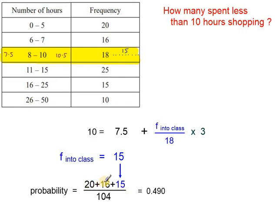So we add them together, the 20 plus the 16 plus these 15, out of 104, and that gives us this probability.